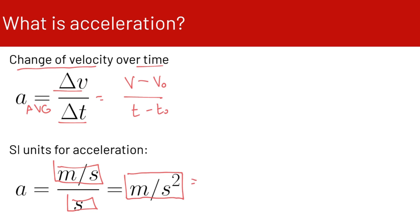We can also think of this as meters per second per second — meters per second divided by seconds — which is how we get meters per second squared.